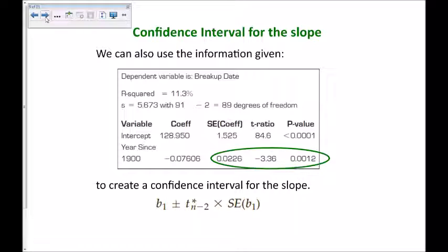We can also do confidence intervals for the slope. Using that same data, here is the formula down here that we would use. B sub 1 is the one that comes from our data. So, this is a data set given to us in the textbook about ice, about an ice breakup, of what date the ice is going to break up.